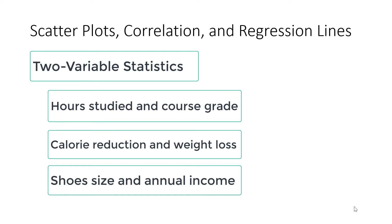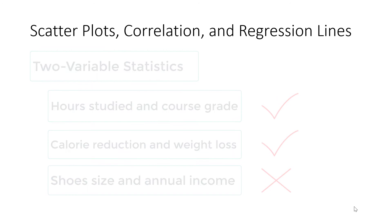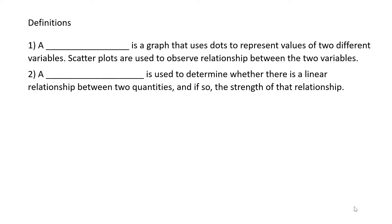The study of scatter plots, correlation, and regression lines will help us determine if a relationship exists between those two variables, and if so, also determine the strength of that relationship. We'll begin with definitions. A scatter plot is a graph that uses dots to represent values of two different variables. Scatter plots are used to observe relationships between the two variables. A linear correlation is used to determine whether there is a linear relationship between two quantities, and if so, the strength of that relationship.